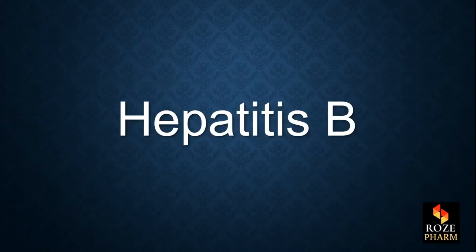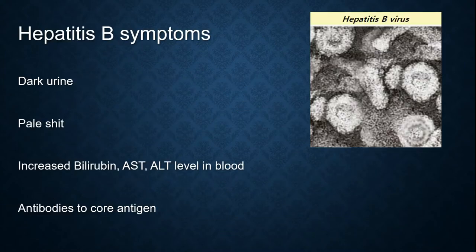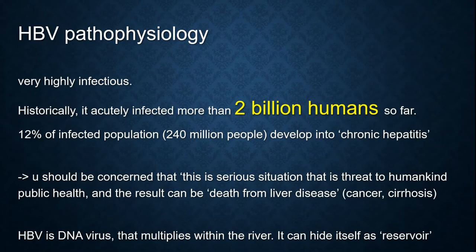Let's look more into hepatitis B. Hepatitis B symptoms include dark urine, pale stool, increased bilirubin, increased AST and ALT levels in the blood, and antibodies to core antigen. Hepatitis B pathology — it is highly infectious, and historically it has acutely infected more than 2 billion humans so far.